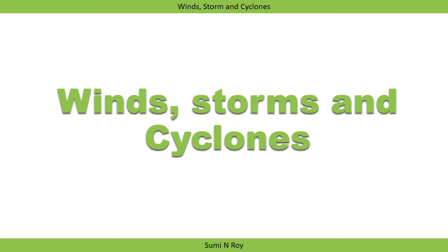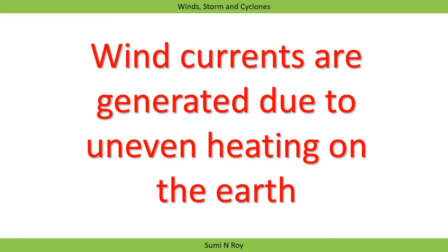Today in our class, we will discuss how wind is produced. Wind is the movement of air which depends on the difference in air pressure between two regions. Air moves from the region of high air pressure to a region of low air pressure. The greater the difference in air pressure, the faster the air moves. Thus, the speed of wind depends on the difference in air pressure between two regions.